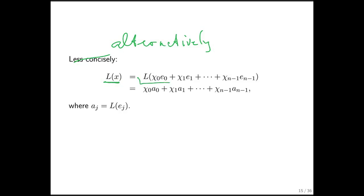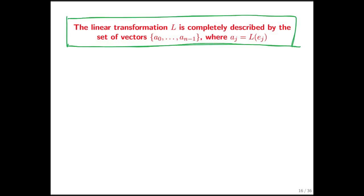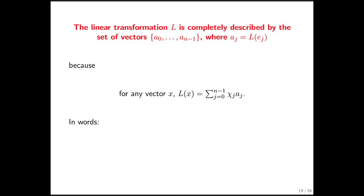L of x equals L of the linear combination of the unit basis vectors, and that's just the linear combination of the vectors you get when you transform the unit basis vectors. I cannot stress how important this is. The linear transformation L is completely described by that set of vectors — you merely need to know how the unit basis vectors have been transformed by that linear transformation. L is completely described by how it transforms the unit basis vectors, and we're going to give you lots of homework on this because it is so important.